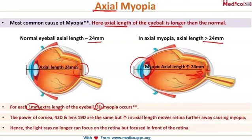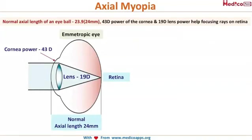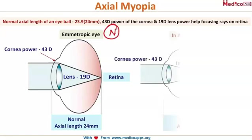The power of the lens and cornea remains the same, so they are not sufficient to focus the image exactly on the retina. In the emmetropic condition, the corneal power is 43 diopters, the lens power is 19 diopters, and the eyeball length is 24 millimeters — that is normal.